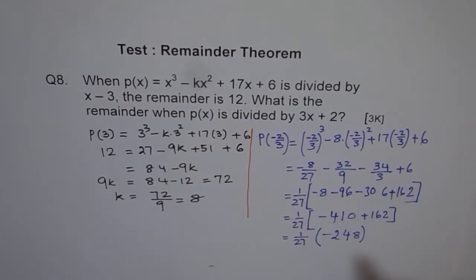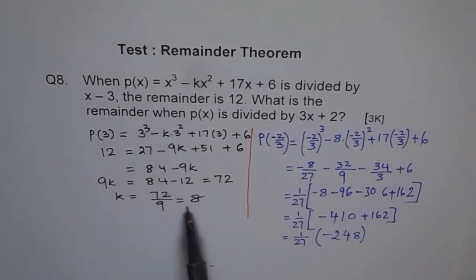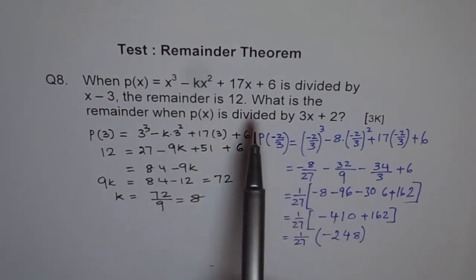Check your calculations with the help of calculator, that would be better. But anyway, try to get the gist of it. The gist is that from the first statement you get the value of k, once you know the value of k, plug it in here. k is 8 for us.